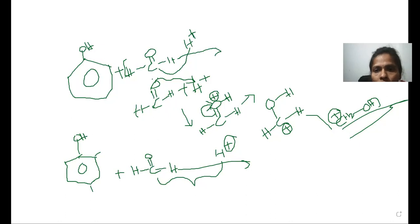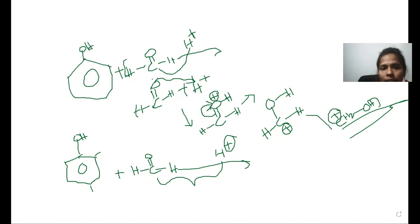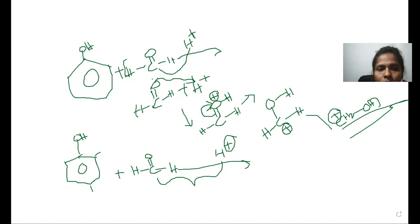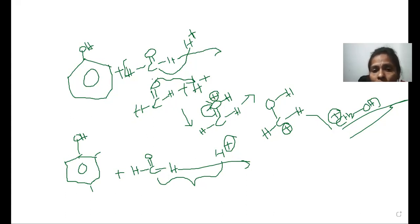Now let us see step 2 — the formation of novolac. Novolac is synthesized by the reaction of ortho-hydroxymethylphenol and para-hydroxymethylphenol with each other. These two undergo a self-condensation reaction — an internal condensation reaction — to produce the novolac.